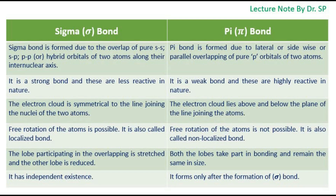Sigma bond is a strong bond and these are less reactive in nature. Pi bond is a weak bond and these are highly reactive in nature. The electron cloud is symmetrical to the line joining the nuclei of the two atoms in sigma bond. The electron cloud lies above and below the plane of the line joining the atoms in pi bond.